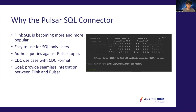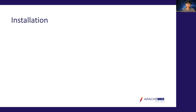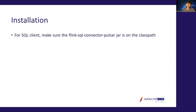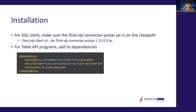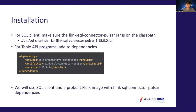Now let's look at how to use the Pulsar SQL Connector, beginning with installation. For the SQL client, you need to download the Flink SQL Connector Pulsar jar, and make sure it's on the classpath when starting the SQL client. If you're using the Table API, you need to add the connector jar to your dependencies, either in a pom.xml or a Gradle file. Throughout this session, we'll be using the SQL client with a pre-built Flink image with all dependencies installed.